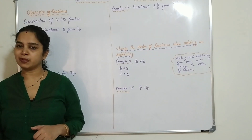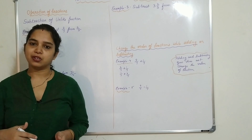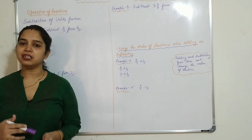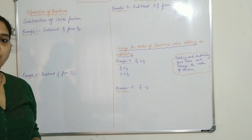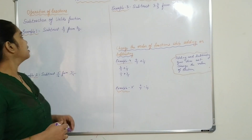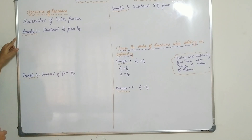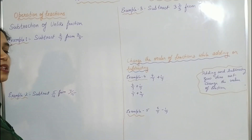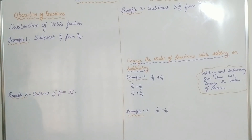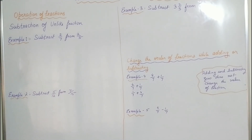One fraction will be bigger and another will be smaller, so we have to subtract the smaller one from the bigger fraction. The subtraction of unlike fractions — I have taken many examples so that it will be clear for you. So subtract 2 by 7 from 2 by 5. Here 2 by 5 is the bigger fraction and 2 by 7 is the smaller fraction, so we have to subtract the smaller fraction from the bigger one.